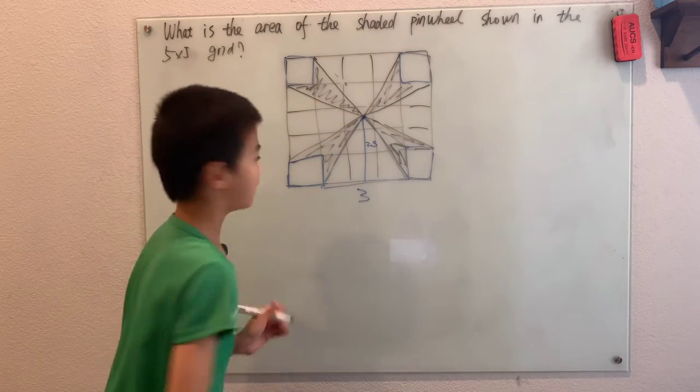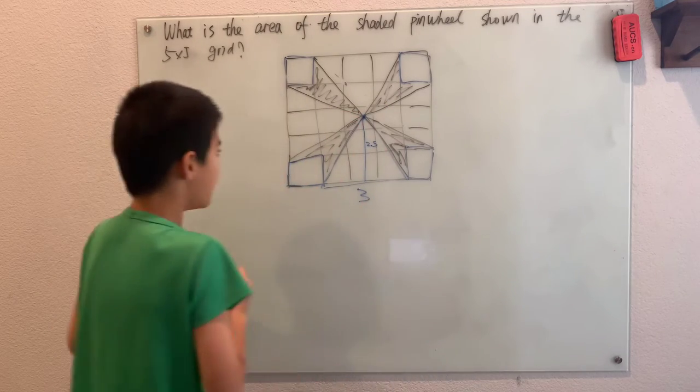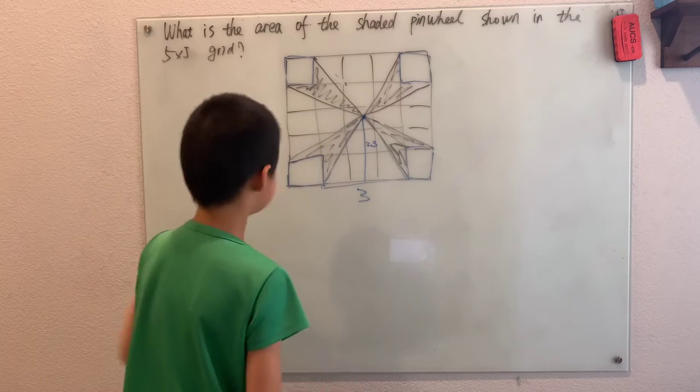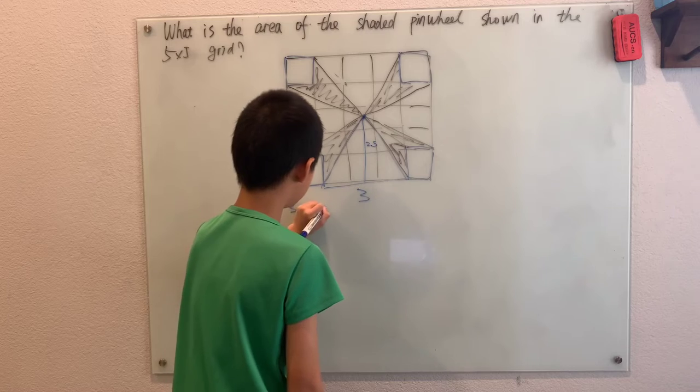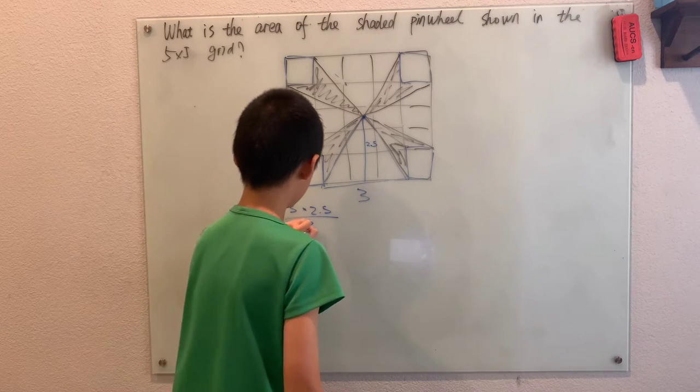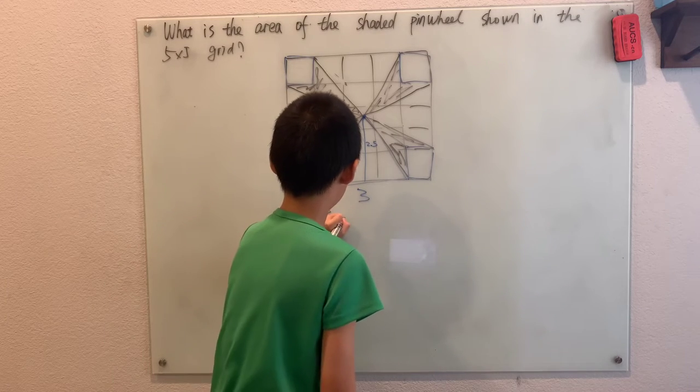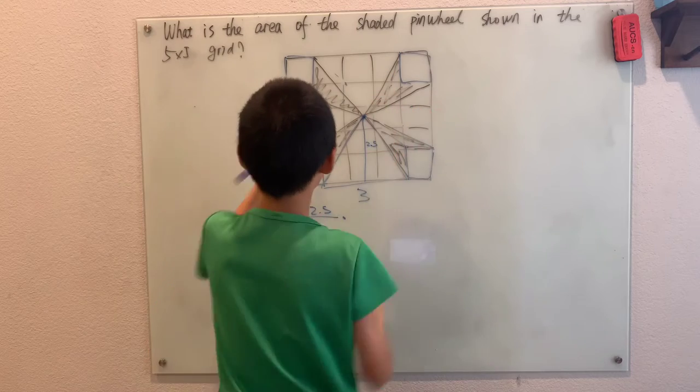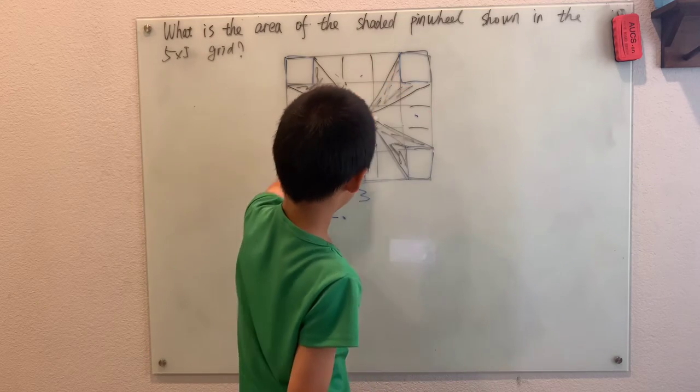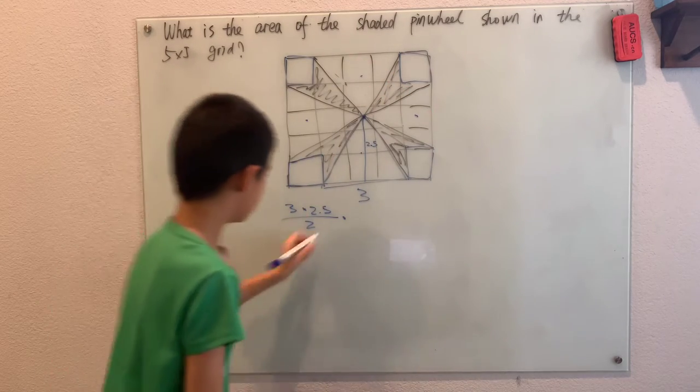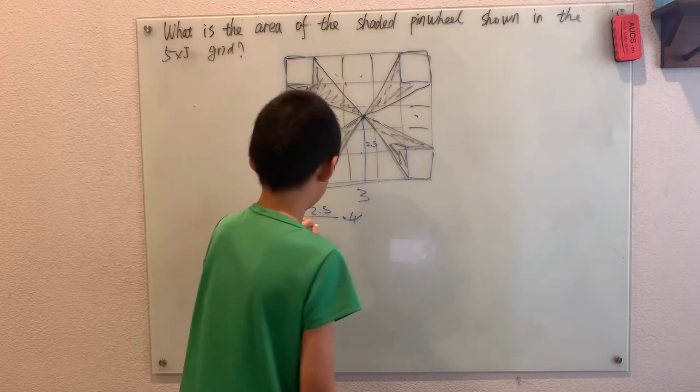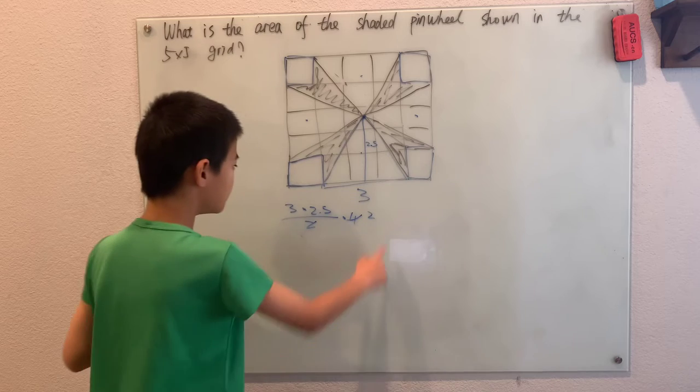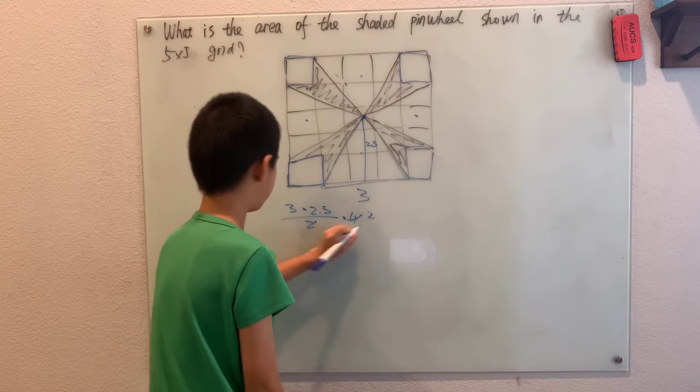So this has height 2.5. So what we can do now is just simply take base times height over 2. And then we have 4 of these identical triangles, so multiplying by 4. And then 2 and 2 cancel.